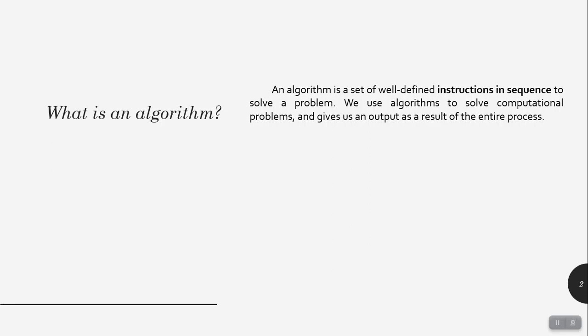A well-defined instructions in sequence — we need to divide the solution into a step-by-step procedure, and once we follow those steps, we'll end up with the solution to our problem. The phrase 'algorithm can be done in many ways' is a double-meaning sentence. It means the algorithm can be represented in different ways, like a bulleted list or a step-by-step procedure, and also that a solution can be represented in many different ways — we can solve a problem in different ways.